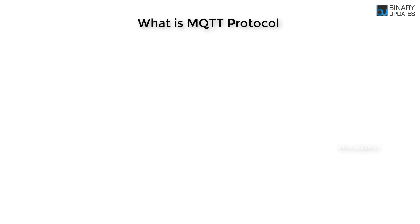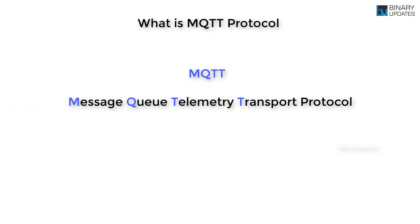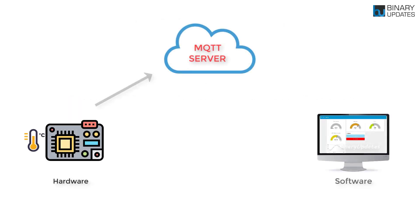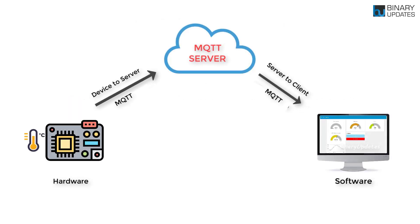If you ever wonder what an MQTT protocol in IoT is all about and how MQTT protocol works, then this video will help you understand. MQTT is a message-queuing telemetry transport protocol widely used in IoT for device-to-server and server-to-client communication. Because MQTT works in a publish and subscribe mechanism, it is one of the most popular lightweight protocols, which suits very well for IoT.